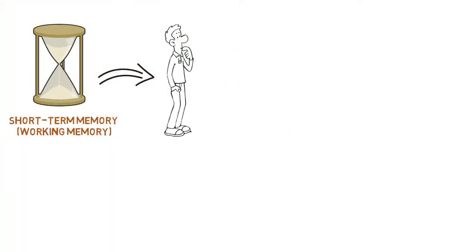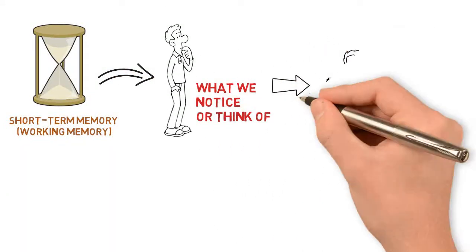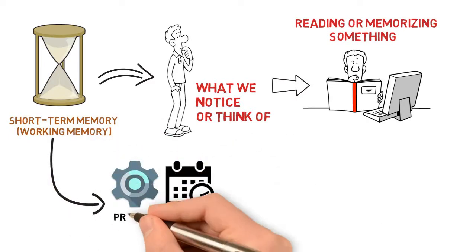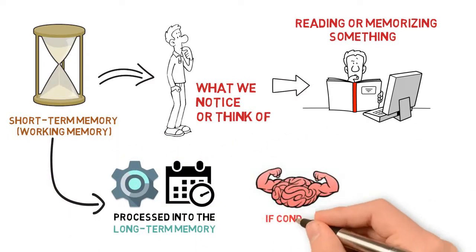Short-term memory, working memory, is what we notice or think of first when we're reading or memorizing something. Then it's processed into the long-term memory, if conditions are healthy in your brain.